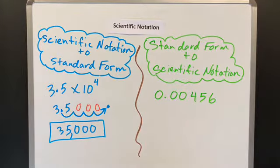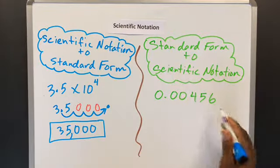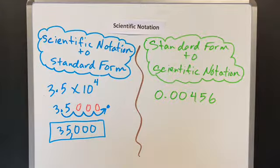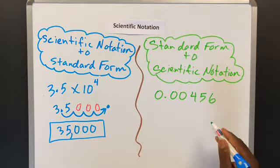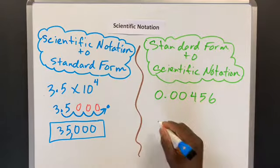Now, first thing we want to do is identify where the decimal is. And because this is written as a decimal with numbers on the right side, we know that the number has to be written in scientific notation form.